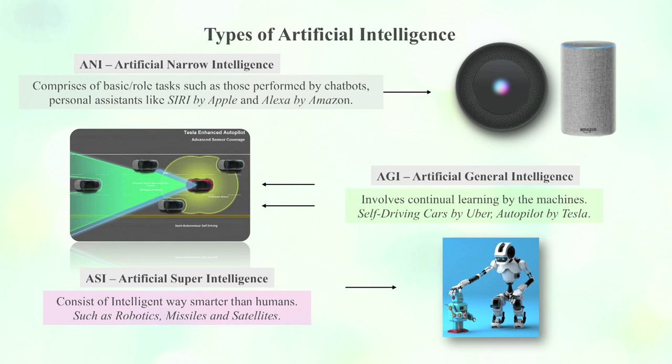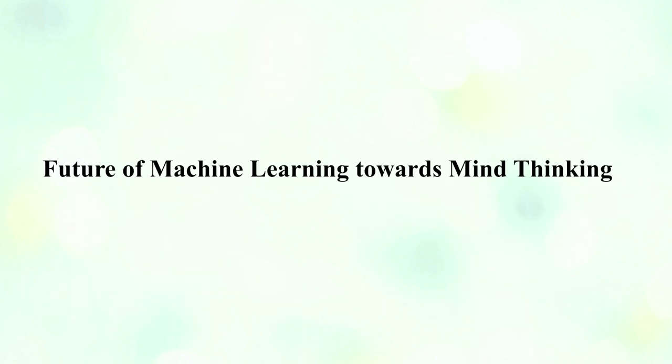There are many types of artificial intelligence, but in generalized form there are three. First, General Artificial Intelligence, which involves continual learning by machines — for example, self-driving cars by Uber and Autopilot by Tesla. Second, Artificial Narrow Intelligence, which comprises basic or role tasks such as those performed by chatbots and personal assistants like Siri by Apple and Alexa by Amazon. Third, Artificial Super Intelligence, which consists of intelligent systems smarter than humans, such as robotic applications.